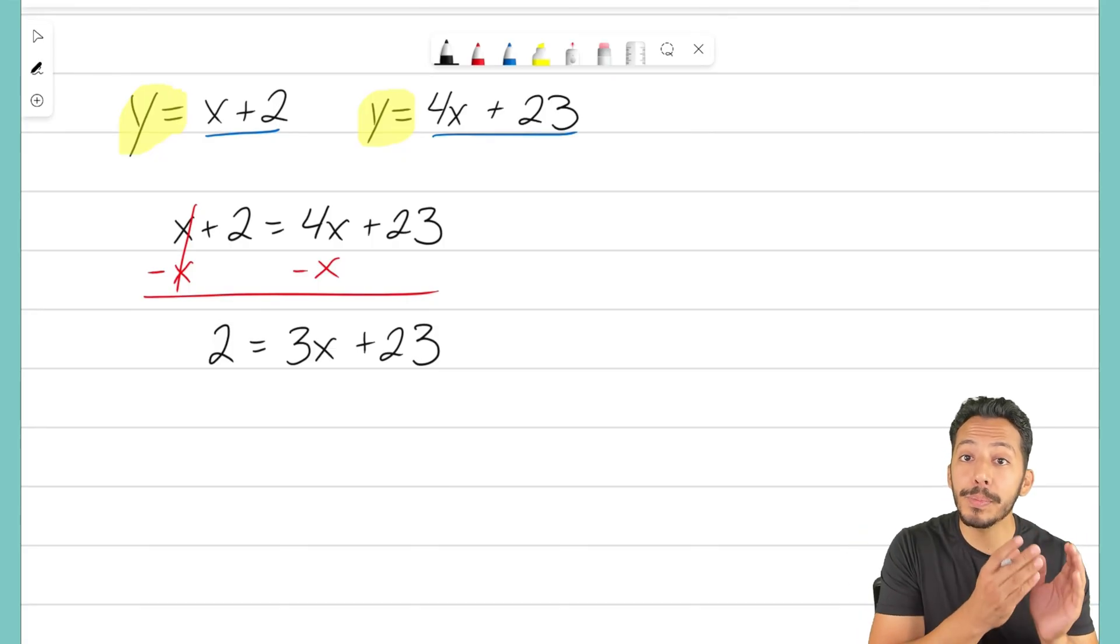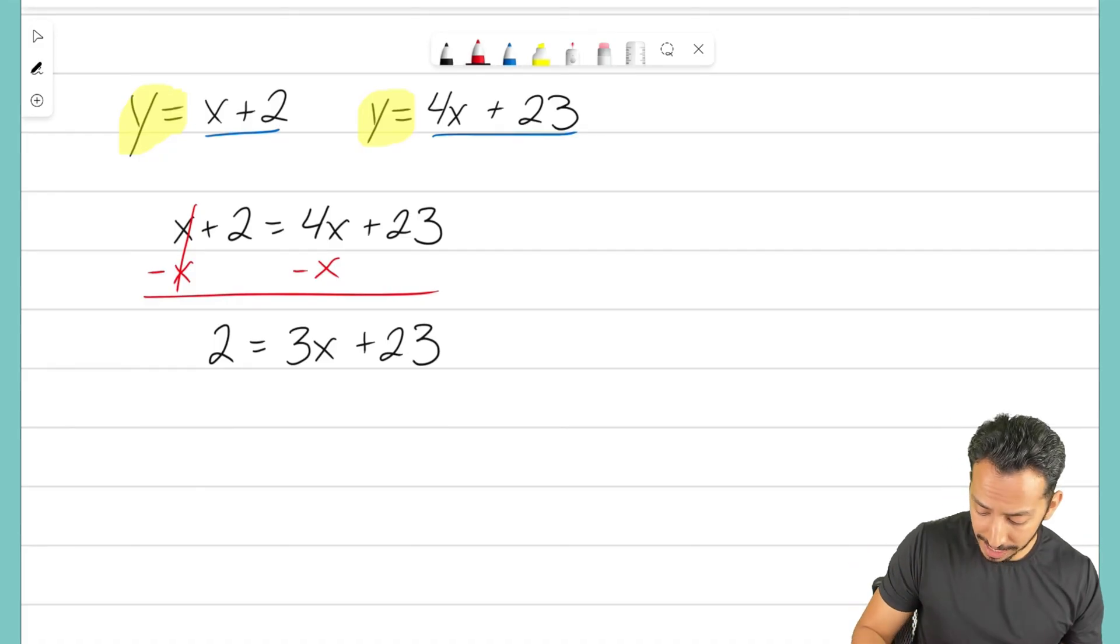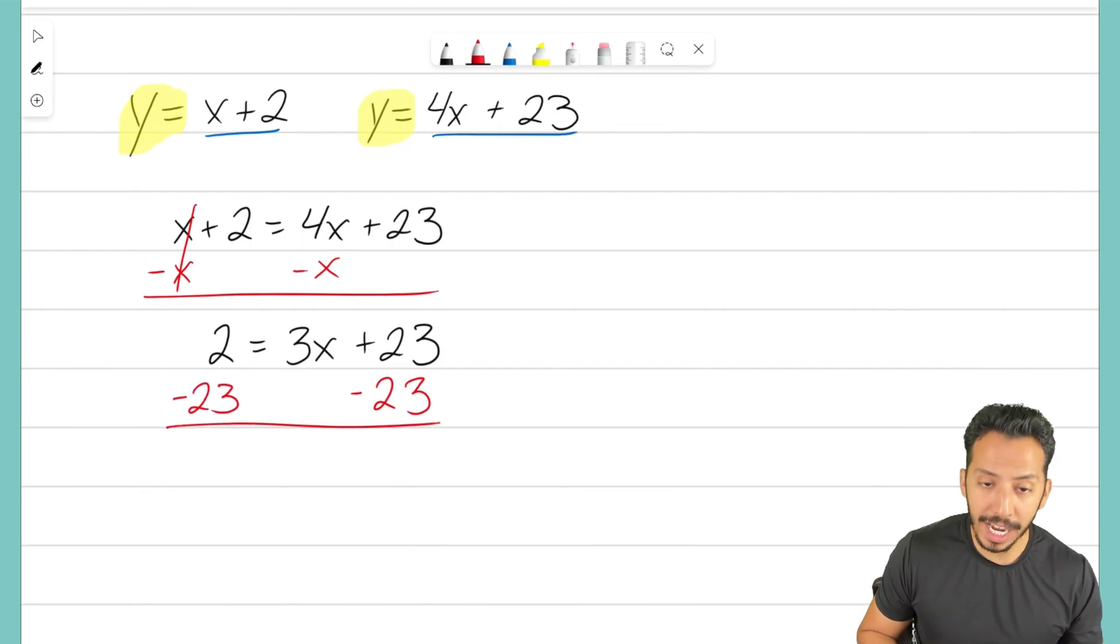Because I moved my x from the left side to the right side, I now want to move my constant, this plus 23 right here, I want to move that over to the left side. To do that, we'll do the opposite and we'll subtract 23 on both sides. Go ahead and write that down. Make sure you show all your steps here. What's really nice is on that right side, the 23's zero out. 23 minus 23 does give you zero. So on the right side, all I have left is 3x.